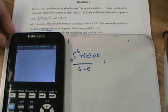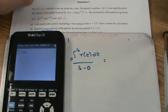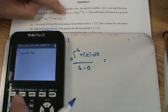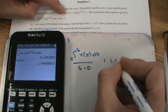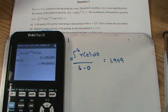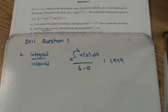Using the calculator: Math → 9, integrate from 0 to 6 of 2sin(e^(x/4)) + 1 dx, then divide by 6. That gives us an average velocity of approximately 1.949 for this time period.